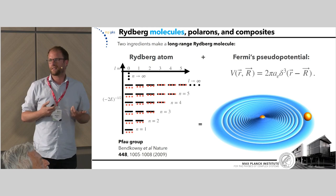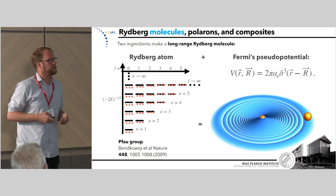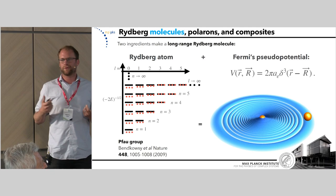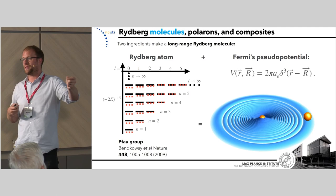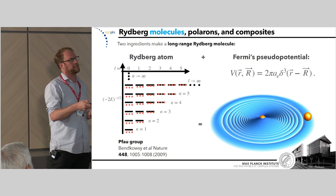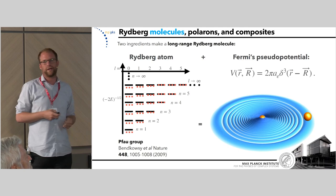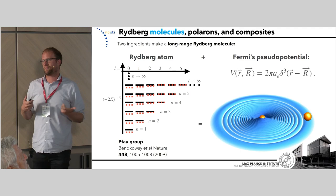This introduces the idea of a Rydberg molecule, which was first observed in Tillman's group about 15 years ago. To get a Rydberg molecule you need two ingredients: the Rydberg atom, and to first order, the simple Fermi pseudopotential — which says that a ground state atom within the orbit of the Rydberg electron feels a potential basically determined by the contact term of the electron scattering off the atom and the s-wave electron-atom scattering length.